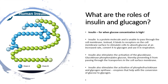Insulin is released when glucose concentration is high. When you wake up and have a big breakfast, your blood glucose concentration will spike. What insulin then does is bind to receptors on the cell membranes to stimulate the cells to absorb glucose at a faster rate and convert it to glycogen. Insulin also stimulates the activation of an enzyme called glucokinase, which phosphorylates glucose once it enters the cells so that glucose cannot leave through the transport proteins — glucose phosphate cannot travel through the carrier proteins in the surface membrane.